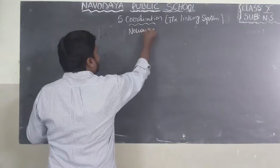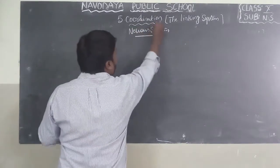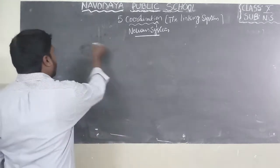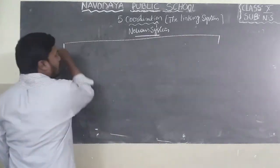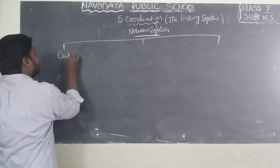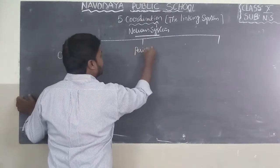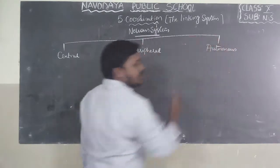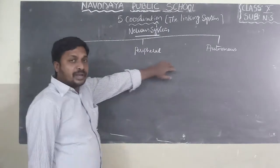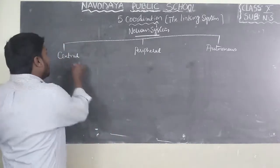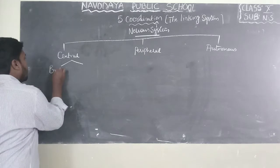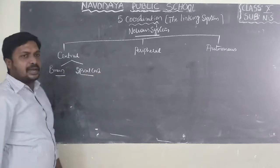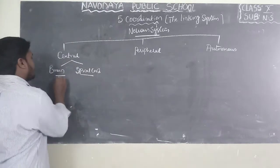Now we are studying the nervous system. After this, I will explain the endocrine system. In the nervous system, we can find three divisions: the central nervous system, the peripheral nervous system, and the autonomic nervous system. Under the central nervous system, there are two major parts — the brain and the spinal cord.